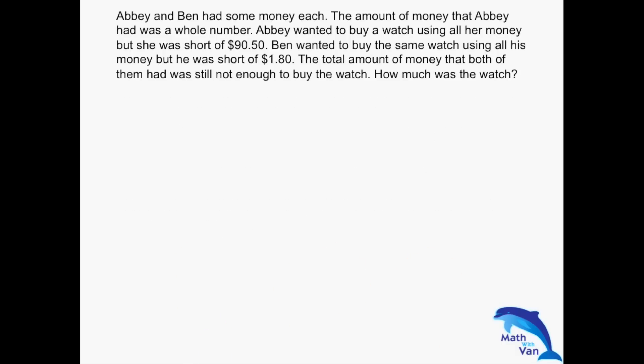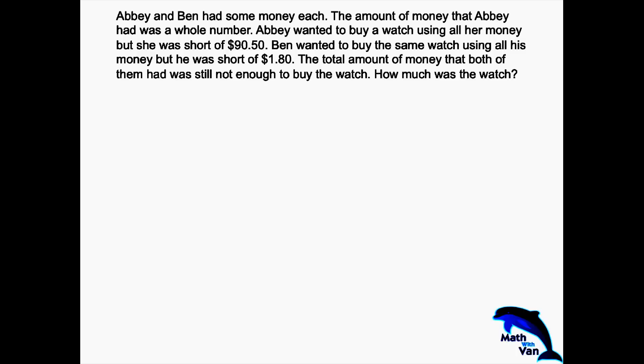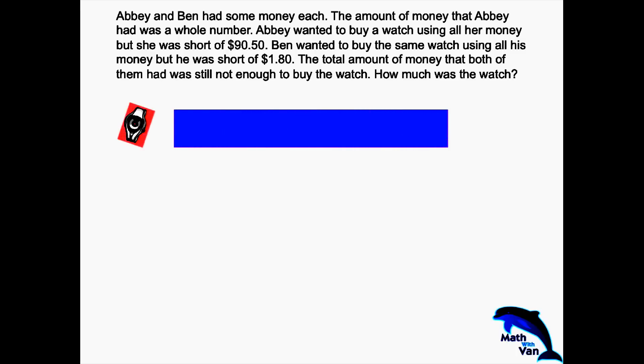In this question we have a common reference which both AB and Ben's money are compared to. The common reference is the watch, so I'll start off by drawing the watch as the common reference.